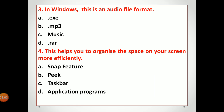Fourth question: this helps you to organize the space on your screen more efficiently — so that the available screen space can be used well and no space is wasted. Which option in Windows 10 helps with this? Options: A is Snap Feature, B is Peek, C is Taskbar, and D is Application Programs.